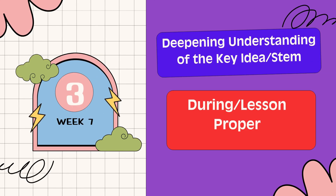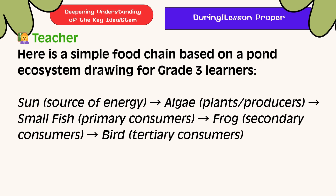Deepening Understanding of the Key Idea. Here is a simple food chain based on a pond ecosystem: the sun as a source of energy, algae as plant producers, small fish as primary consumers, a frog as a secondary consumer, and birds as tertiary consumers.